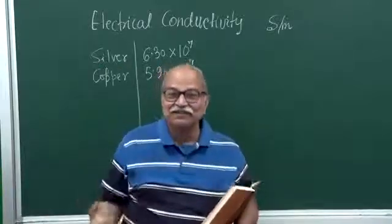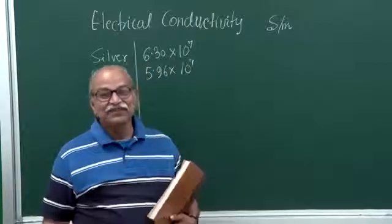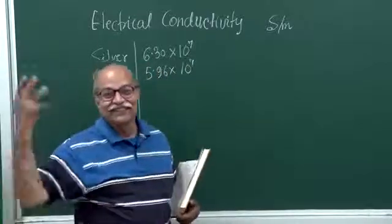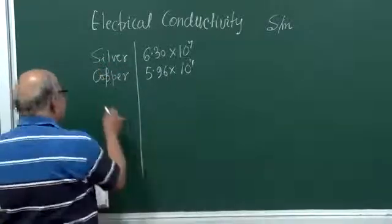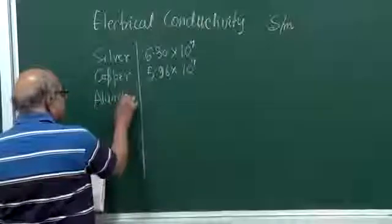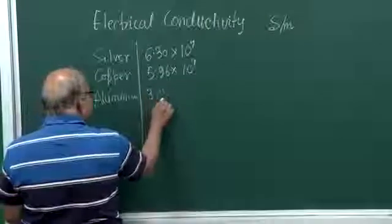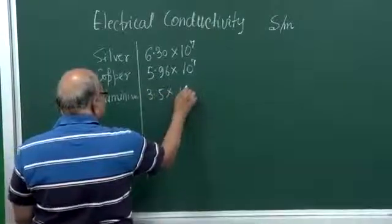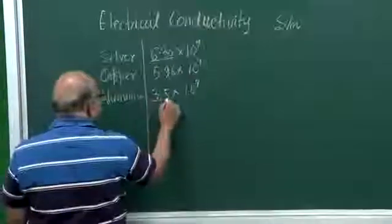Of course, the costs will be, you know, you will be at the top of the world. Then you have aluminum. Aluminium, the conductivity is 3.5 times 10 to the power 7. This is 6.30, this is 3.5.